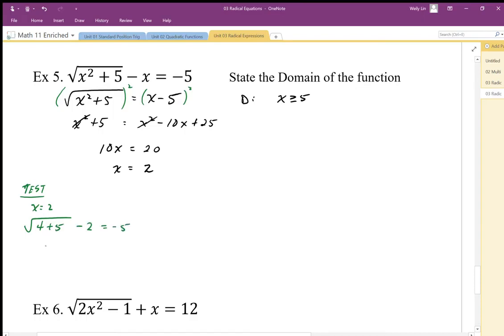So I get square root of 9 minus 2 equals negative 5, although that's not true. 3 minus 2 is not equal to negative 5. So this is definitely extraneous.